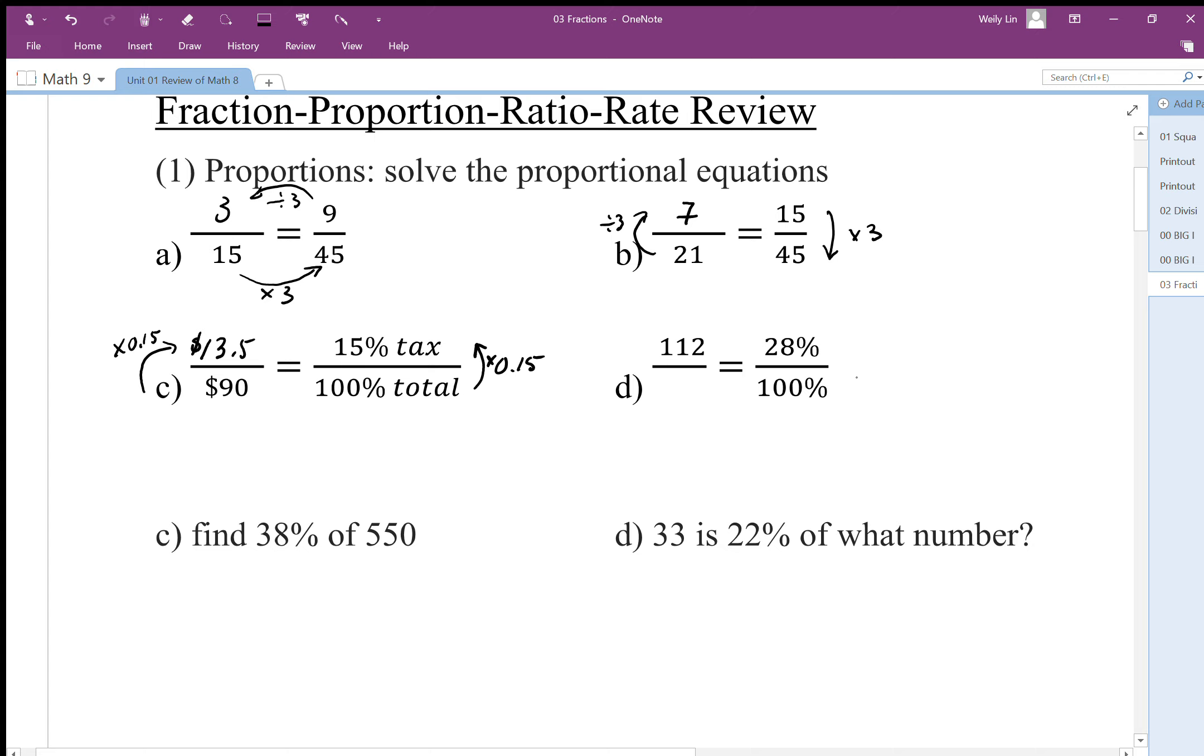Using that same decimal multiplier - this vertical multiplier is what we call a unit rate sometimes, but it also is our decimal in terms of a percentage problem. We work it out to be 0.28. I can use that same decimal percentage, but in this case I'm going to go down, so I need to do the opposite - divide by 0.28. 112 divided by 0.28 gives me 400, so 112 represents 28% of 400.